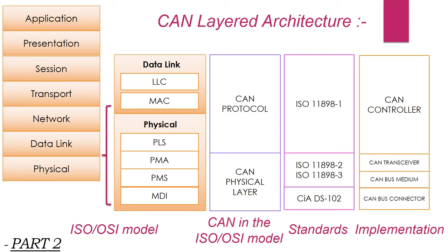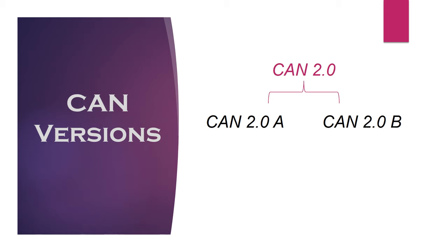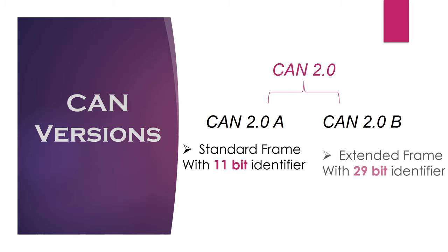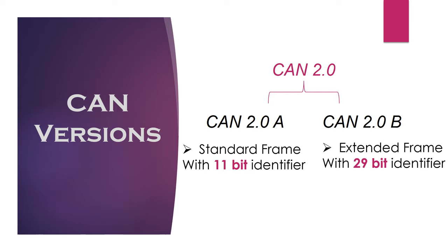In part 2, we discussed the OSI reference model. According to this model, the CAN architecture defines two layers: data link layer and physical layer. We also discussed CAN standards defined under the ISO 11898 family. ISO 11898 has three parts: part 1 covers the specification for the data link layer, while parts 2 and 3 cover the CAN physical layer for high-speed and low-speed CAN respectively. The latest version of CAN specification is CAN 2.0, which has two parts — part A defines the standard frame format with an 11-bit identifier, and part B defines the extended frame format with a 29-bit identifier.